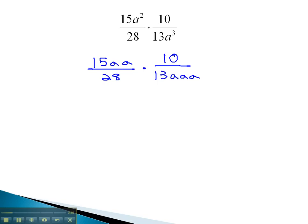Now we can look at any reducing. You may notice that the 28 and 10, one from the numerator, one from the denominator, they're both divisible by 2. 28 divided by 2 is 14, and 10 divided by 2 is 5.